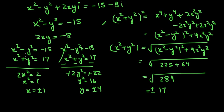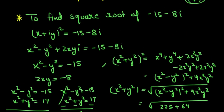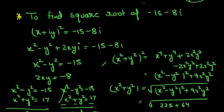Now with x² − y² = −15 and x² + y² = 17, adding gives 2x² = 2, so x = ±1, and subtracting gives 2y² = 32, so y = ±4. Substituting back into x + iy gives the two square roots of −15 − 8i. Thanks for watching — always remember that math is everything.